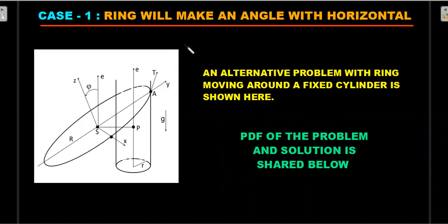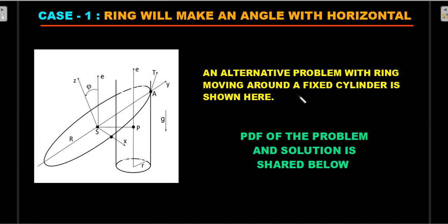So what are the two things that could actually happen? Case one: the ring will make an angle with the horizontal — I call this angle phi. As an alternative problem, I've picked up a famous olympiad problem: a ring moving around a fixed cylinder, where the cylinder represents the finger. Even with a fixed cylinder, you can never have the ring be horizontal. The PDF of this problem and solution is shared in the description below — I'll cover it fully in a future video.